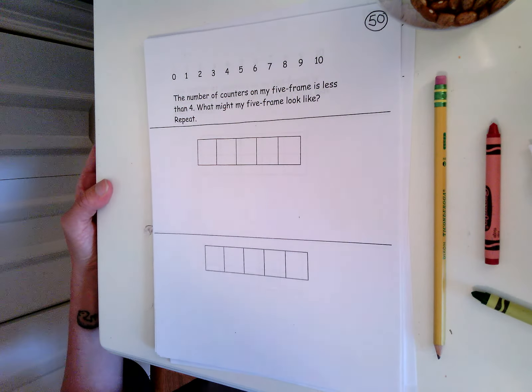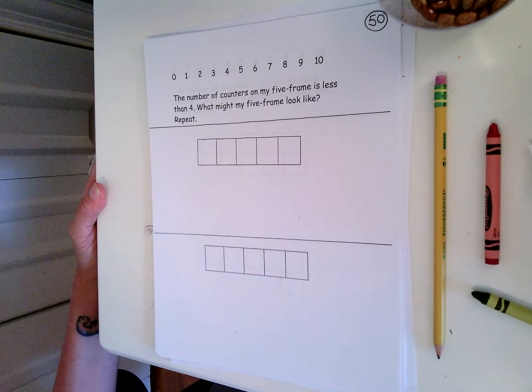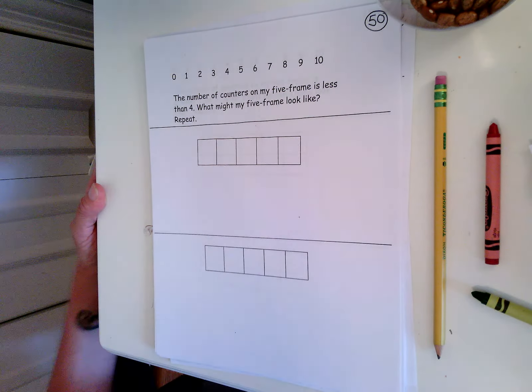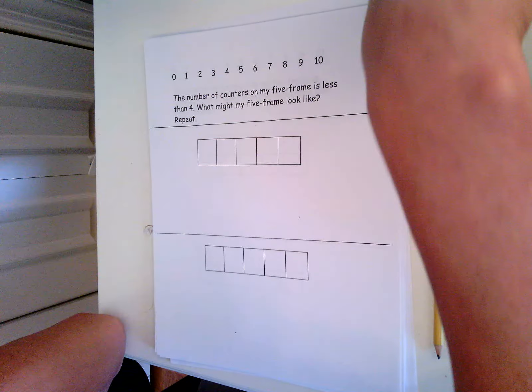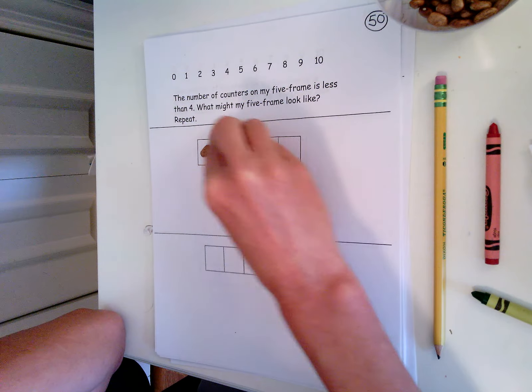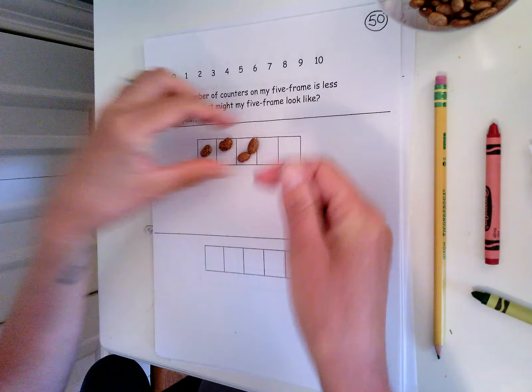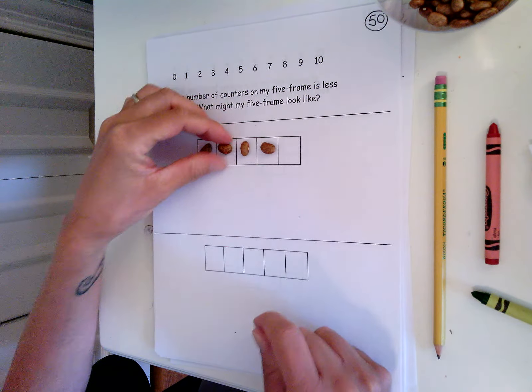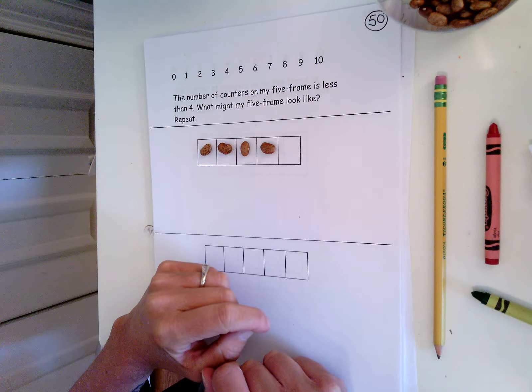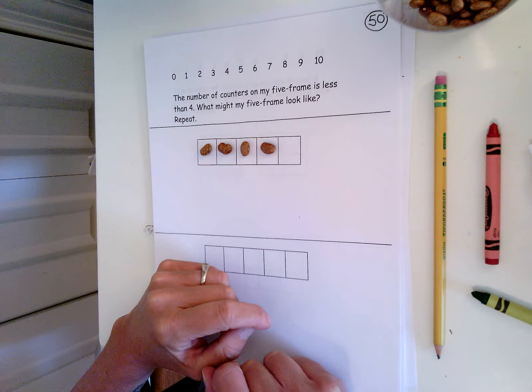So the number of counters on my five frame is less than four. Can I put four counters on my five frame? Is that less than four? No, that's equal to four.